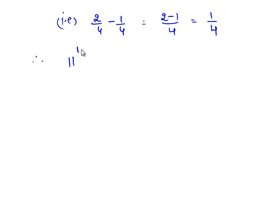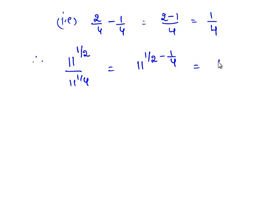Therefore, 11 raised to the power of 1 by 2 divided by 11 raised to the power of 1 by 4 is equal to 11 raised to the power of 1 by 2 minus 1 by 4, which is 11 raised to the power of 1 by 4.